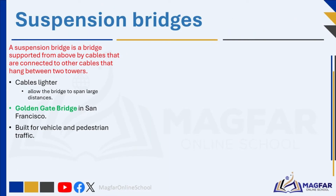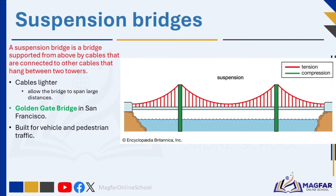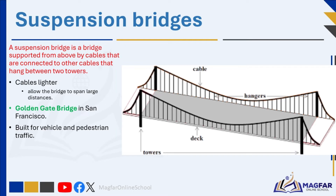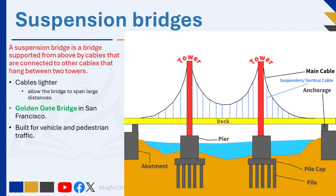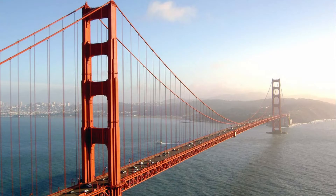A suspension bridge is a bridge supported from above by cables connected to other cables that hang between two towers. Cables are suspended between tall towers which support the weight of the bridge deck hanging below. The bridge deck hangs from cables that run the length of the bridge. The towers from either end hold the main cables, and lighter vertical cables reach down from the main cables to the bridge deck. The cables experience tension, a pulling force, to hold the bridge up. Cables used in suspension bridges are lighter than beams or arches, allowing the bridge to span large distances. The supporting towers or pillars must be very strong and have firm foundations. The Golden Gate Bridge in San Francisco, USA is an example of a suspension bridge. Suspension bridges are simple, easy to build, cheap, and use materials efficiently, and are built for vehicle and pedestrian traffic.